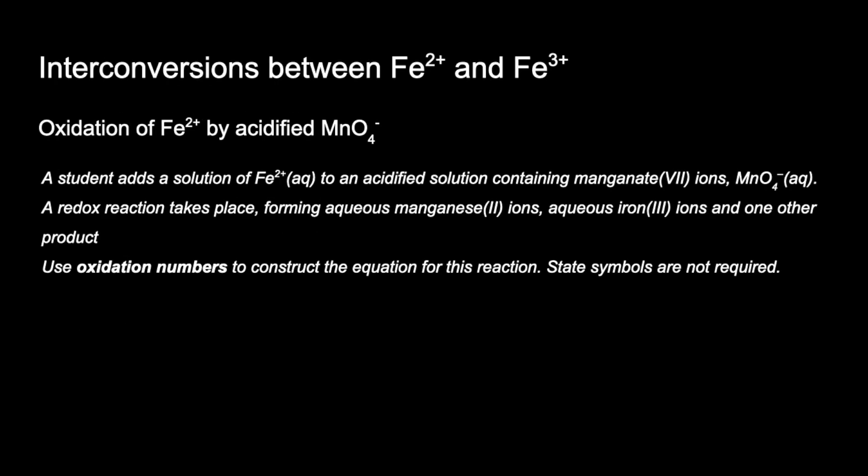The first one I'm going to look at is the interconversion between iron 2+ and iron 3+ — specifically the oxidation of Fe²⁺ by acidified manganate 7 ions, MnO₄⁻ ions. We've been supplied with some information and we've got to use oxidation numbers to construct the equation. So basically iron 2+ has reacted with MnO₄⁻ ions.